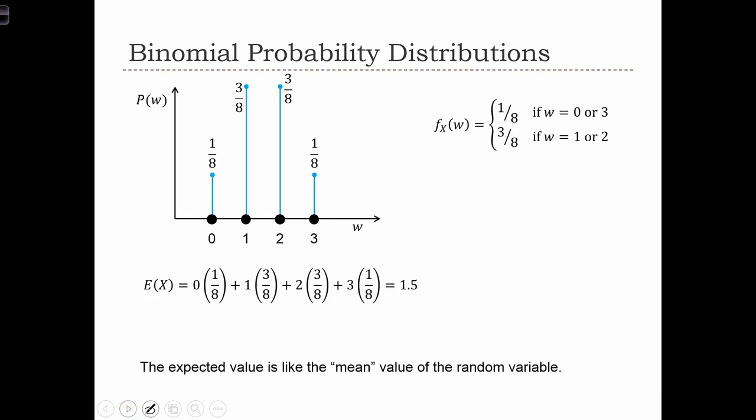Now, what about calculating the expected value of this random variable? Well, recall that the expected value of x equals the sum k equals 1 to k of k times pk, which is just the probability that x equals k. So we have four different outcomes.